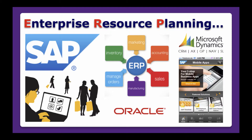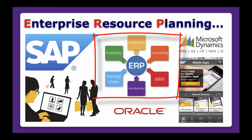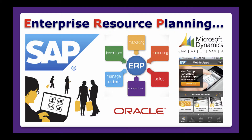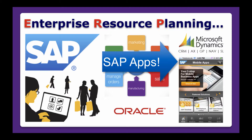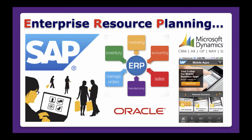We're going to look at enterprise resource planning systems primarily on this unit, and that consists of things that handle inventory, marketing products, accounting for what's been bought and sold, how we sell the products, make them, and how those orders are managed. We'll look primarily at SAP, but we also look at Oracle systems and Microsoft Dynamics, and we'll also look at mobile systems. There are lots of apps available to do enterprise-wide software system type transactions on mobile apps as well.